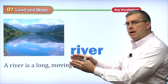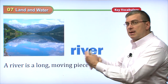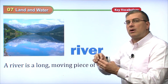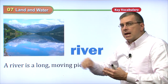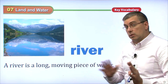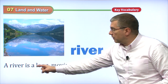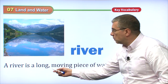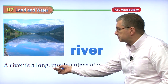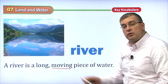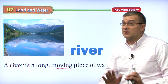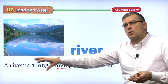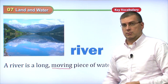Sometimes rivers are smaller, narrower, but they all have one thing in common — the water in a river is moving. If the water is not moving, it's a lake. We'll talk about that in a little bit. But a river is a long, moving piece of water. So the key word here is moving. If the water is moving, it is a river. If it's not moving, it's something else. So a river is a long piece of water that is moving along.